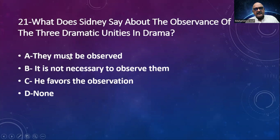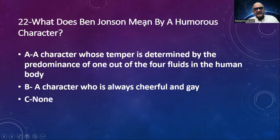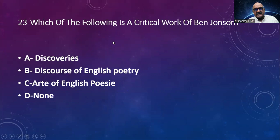Number 22: What does Ben Jonson mean by a humorous character? Option A: a character whose temper is determined by the predominance of one out of the four fluids in the human body. Option B: a character who is always cheerful and gay. The correct answer is option A. Number 23: Which of the following is a critical work of Ben Jonson? Options: Discoveries, Discourse of English Poetry, Art of English Poesie, none. The answer is Discoveries.